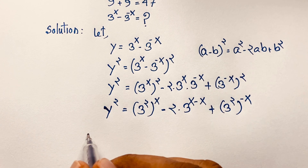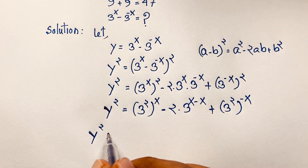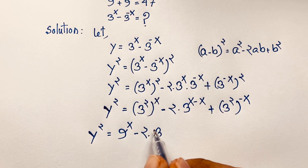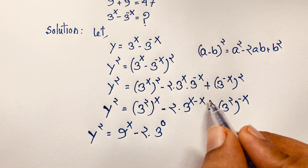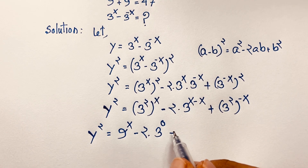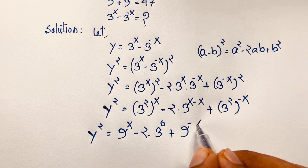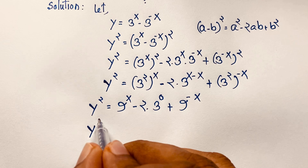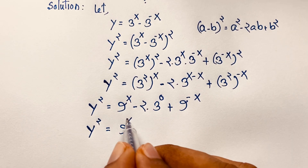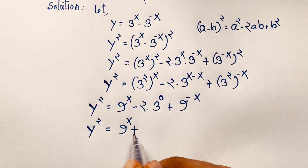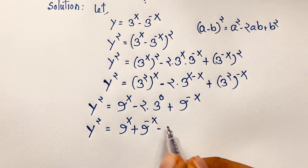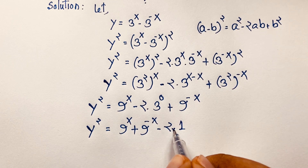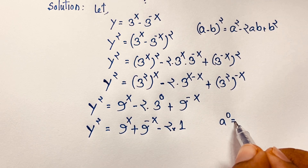Now you can see y squared is equal to 9 to the power x minus 2 times 3 to the power 0, since x minus x equals 0, plus 9 to the power minus x. So y squared equals 9 to the power x plus 9 to the power negative x minus 2 times 1. You know that 3 to the power 0 is 1, because a to the power 0 is always 1.